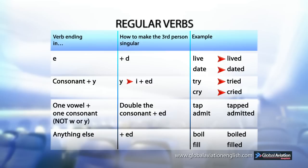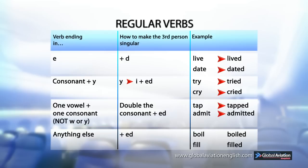With a verb ending in one vowel and one consonant, not W or Y, to make the simple past, you double the consonant and add ED. For example, tap → tapped, admit → admitted. A verb ending in anything else: to make the simple past, add ED. For example, boil → boiled, fill → filled.